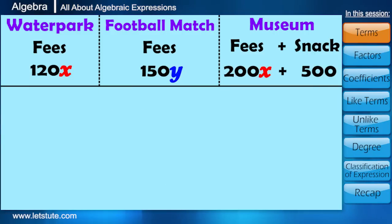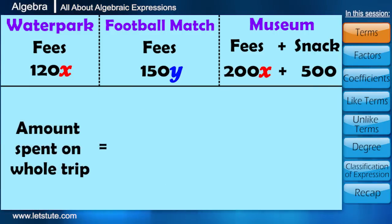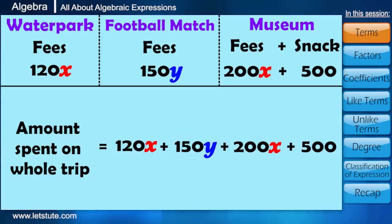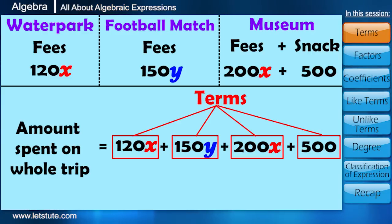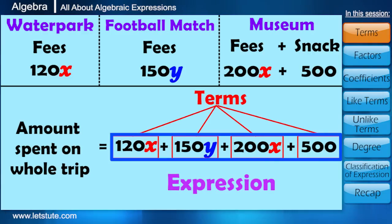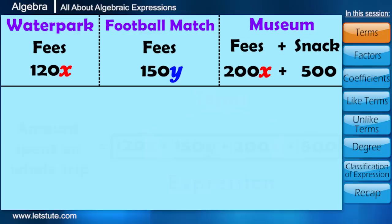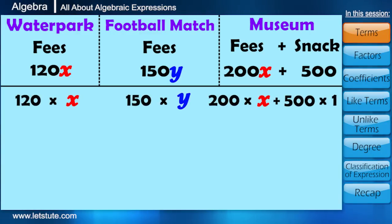So finally, the amount spent on the whole trip, that is water park, football match and the museum, is 120X plus 150Y plus 200X plus 500. Here we can see that the terms are added together to form an expression. Friends, we now know that a term is basically multiplication of numbers and variables, and these numbers and variables are individually called as factors.